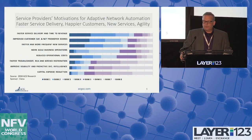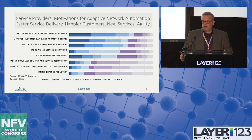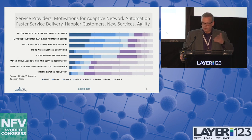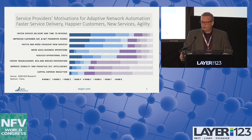So what are some of the findings from that research? First, let's start with what are service provider motivations for trying to do what we called adaptive network automation — or generically, automation. We asked folks to rank one through five: what is the biggest motivation to the least motivation driving them to pursue this automation journey?